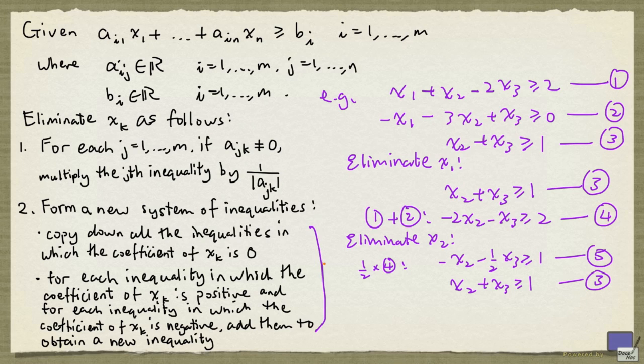And now we perform this step here. So we just form a new inequality by adding 3 and 5. And that will give us 1 half x3 greater than or equal to 2. Clearly there's a solution to this system.